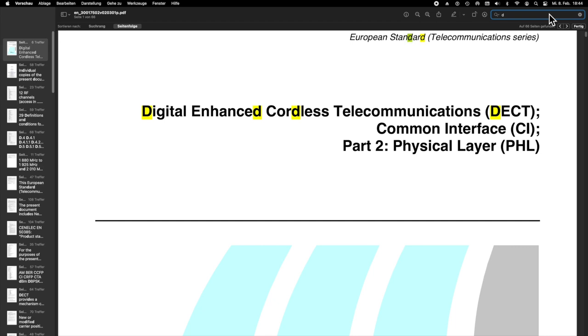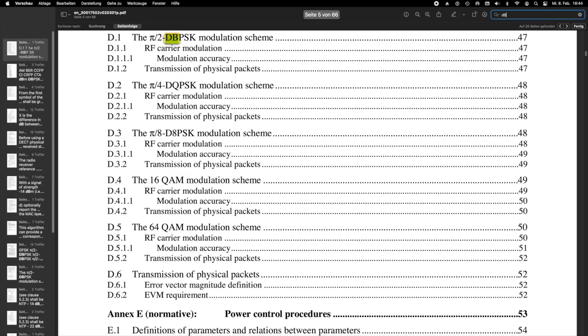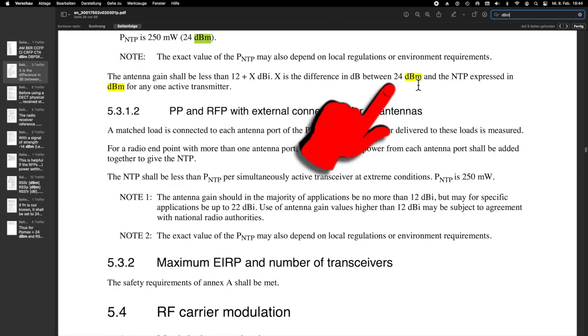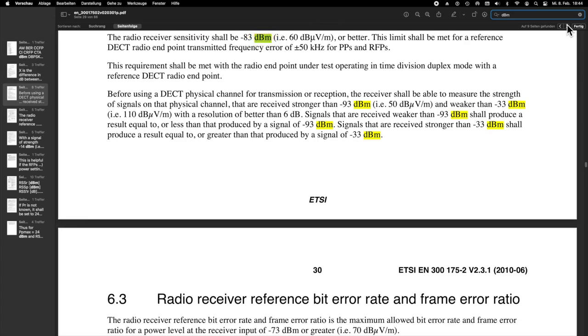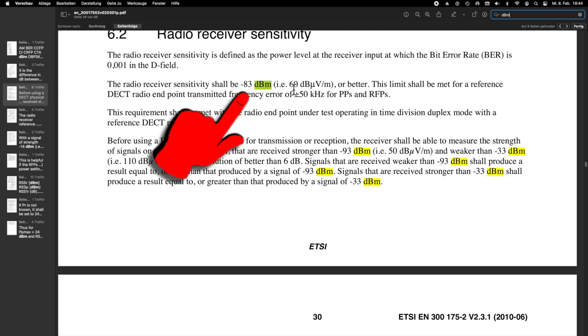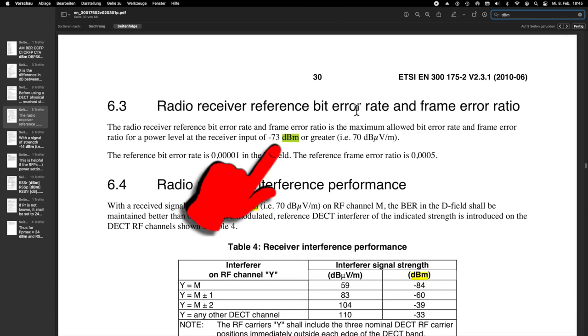So I searched for dBm. The transmission power can be maximum 24 dBm which corresponds to 250 mW. The receiver sensitivity is minus 83 dBm. But for a low bit error rate you need at least minus 73 dBm.